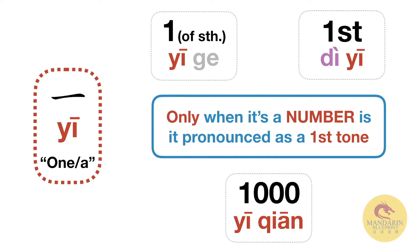Now don't worry — I know we haven't covered these other pronunciations yet, but this is just to focus on the tone change rule itself. And this is actually the only situation where 一 is pronounced yī, which is funnily enough the minority of situations. So what about the other two?